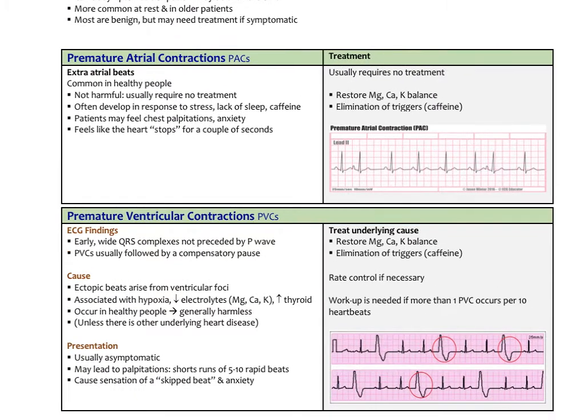Premature atrial contractions are extra atrial beats, common in healthy people, not harmful, and usually don't require any treatment. They often develop in response to stress, lack of sleep, or caffeine. Patients may feel chest palpitations or anxiety — like the heart stops for a couple of seconds and restarts. This usually doesn't require treatment; maybe some electrolyte replacement like magnesium and eliminating any triggers.